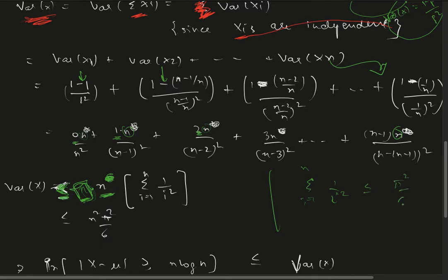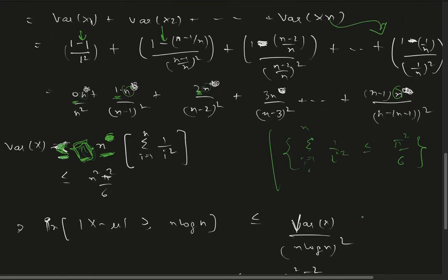We have this result that the summation from i=1 to n of 1/i^2 is less than or equal to π^2/6, or we can also say that this tends to π^2/6.